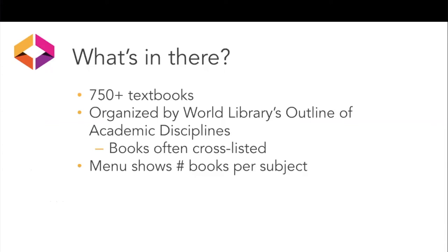So what's in the library? Right now there are more than 750 textbooks, and usually a couple of books a week are new and look to meet our criteria. We really depend on the community to point us to those books, so please always feel free to suggest a book. What's in the library is organized by the World Library's Outline of Academic Disciplines — a decision made with the steering committee, who suggested we follow an existing structure.